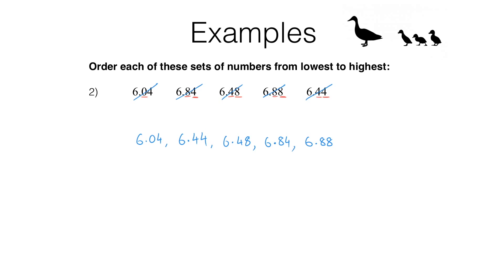In this particular case, because all of the numbers have the same number of decimal places, we can actually ignore the decimal point. You could pretend they were all whole numbers just by taking out the decimal point, put them in order, and you would get exactly this list if you then pop the decimal point back in. That technique won't always work however — you've got to be careful, as we'll see in later examples.